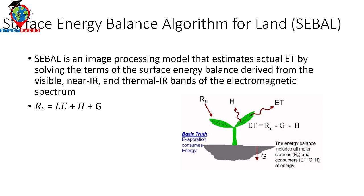The three consumers of net radiation are: H, which is the sensible heat flux to the air; G, which is the soil heat flux; and ET, which is evapotranspiration. So the total net radiation Rn is distributed among these three components: H, ET, and G.